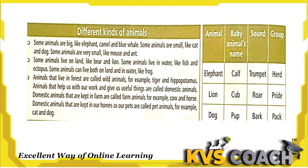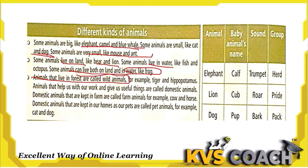Some animals are big like elephant, camel, and blue whale. Some are small like cat and dog, and some are very small like mouse and ant. Some animals live on land like bear and lion, some live in water like fishes, and some live on both land and water like frog and crocodile. Animals that live in forest are called wild animals, like tiger, hippopotamus, and lion.